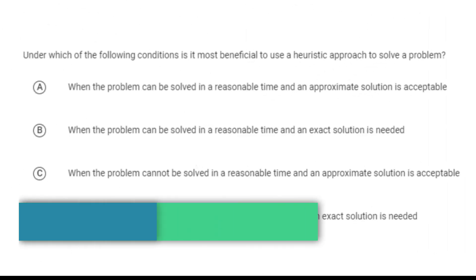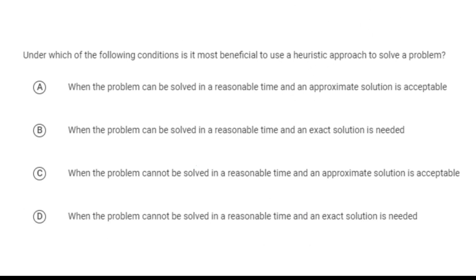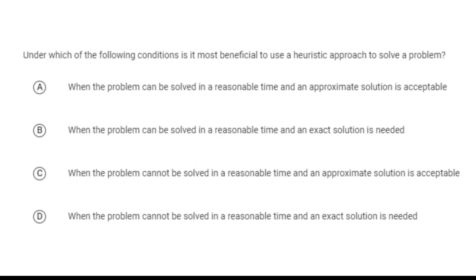Now that we've seen reasonable and unreasonable time algorithms, the question is: what do we do about unreasonable time algorithms? It turns out that even though it takes too long to solve a problem optimally, sometimes it's very simple to find an approximation in reasonable time. This is called a heuristic.